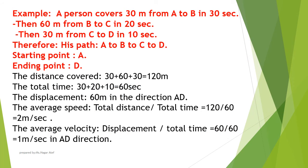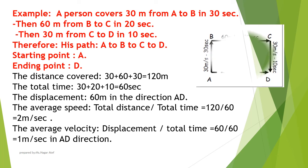For example, a person covers 30 meters from A to B in 30 seconds, then 60 meters from B to C in 20 seconds, then 30 meters from C to D in 10 seconds. Therefore, starting point is A and ending point is D.